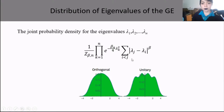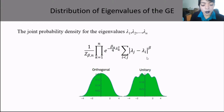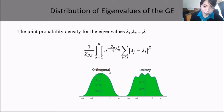A question came from a participant: why does the unitary distribution not look like a semicircle, while the orthogonal one does? The speaker acknowledged not having thought about this. The speaker noted she is working mainly with Wishart ensembles.